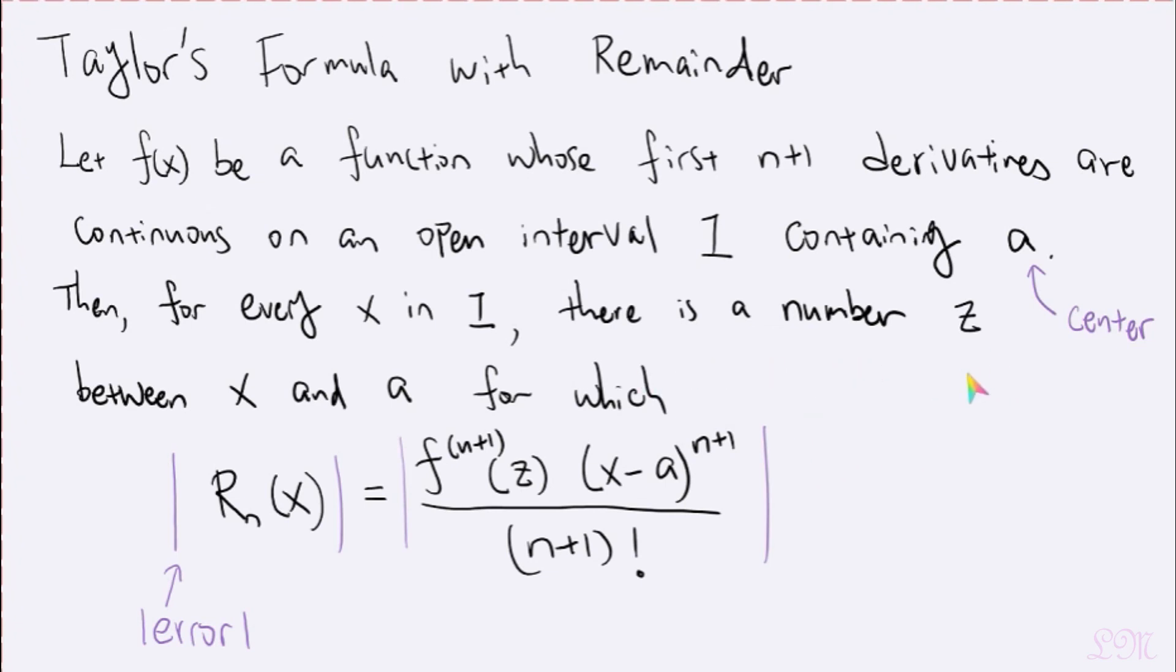So there exists a number on this interval such that blah blah blah. If you're thinking about the mean value theorem, you are absolutely right. So you can do some research on your own, but basically the Taylor's theorem is a generalization of the mean value theorem.